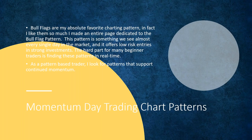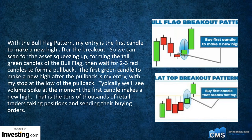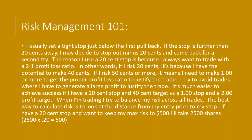As a pattern-based trader, I look for patterns that support continued momentum. With the bull flag pattern, my entry is the first candle to make a new high after a breakout. We scan for the asset squeezing up, forming tall green candles of a bull flag, then wait for the second or third red candle to form a pullback. The first green candle to make the high after the pullback is my entry, with my stop at the next pullback. Typically we see a volume spike at the moment the first candle makes a new high — that is tens of thousands of retail traders taking positions, sending in their buying orders. Remember risk management: I usually set a tight stop just below the first pullback. You have to learn how to read candles and understand what a bull pattern is, and be able to read your charts to see when a pennant or a flag exists.